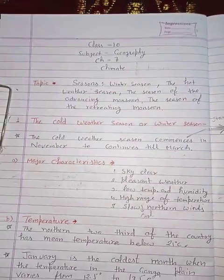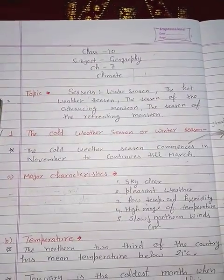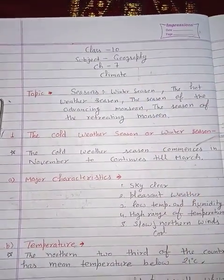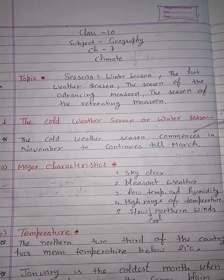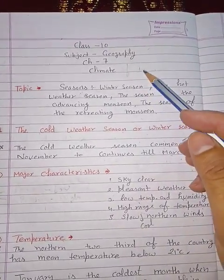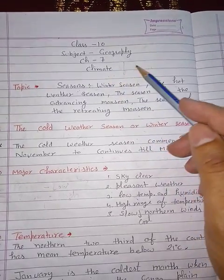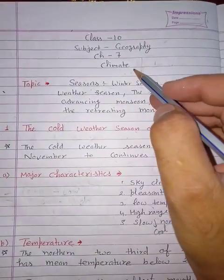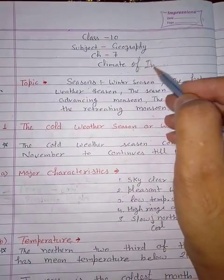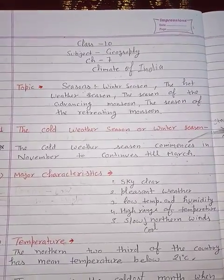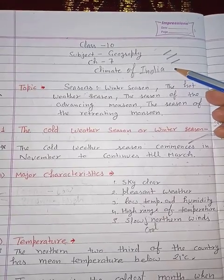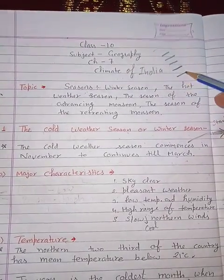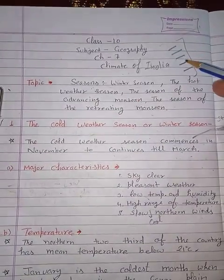Today we discuss Chapter 7 on climate. In this chapter, we already discussed in previous classes what is climate and the factors affecting the climate. Here, specially, we talk about the climate of India — factors like distance from the sea, altitude, latitude, jet stream, and barrier relief. Those factors we discussed in the last previous lecture.